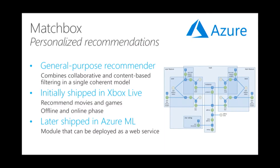Next is Matchbox, a general-purpose recommender system which combines collaborative filtering and content-based filtering into one coherent model. Collaborative filtering captures when a user likes or rates an item. Separately you have user features like age and gender, and item features like, in the case of a movie, year of release or genre. All of this heterogeneous data is in one model. It initially shipped in Xbox Live with offline and online phases, used to recommend movies and games to Xbox Live users. Right now it's running in production in Azure Machine Learning, our cloud-based platform for machine learning where you can hook up different machine learning blocks and deploy them as a web service with a click of a button.